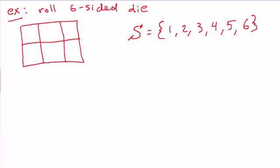So here my chance experiment is rolling a six-sided die. Here is my sample space, a list of all six possible outcomes. And here I've set up a little table similar to a Venn diagram except I've split it into six spots, six kind of cells.